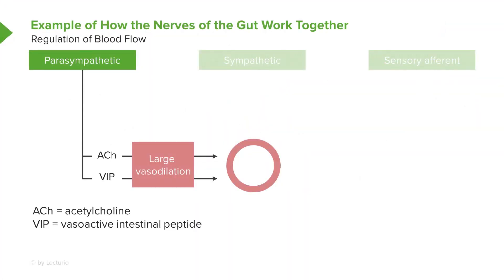The control of blood flow also has parasympathetic and sympathetic components. The parasympathetic control of blood flow is to increase it. There are two primary neurotransmitters associated with increasing blood flow to the gastrointestinal system.